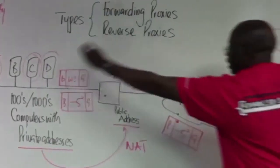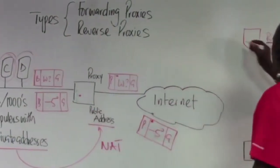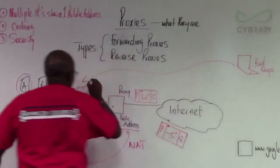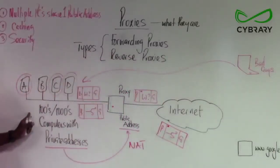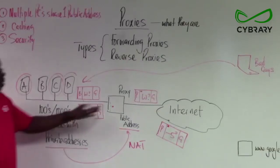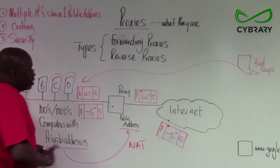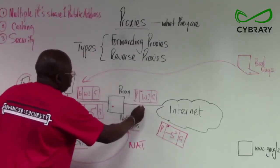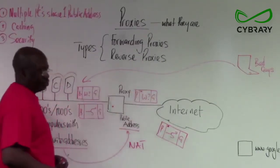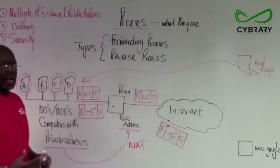They don't see our internal addresses. So these bad guys cannot directly attack the internal network. They don't see the addresses. So that way, our proxy also offers some form of security. Our proxies could be sat behind a firewall or have a firewall built into them. That way, they have their own security.